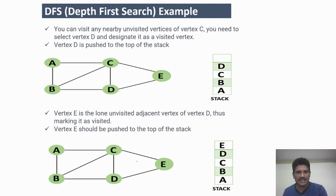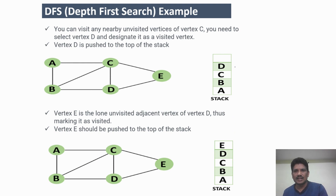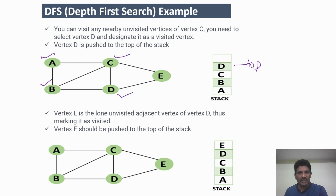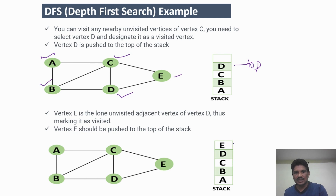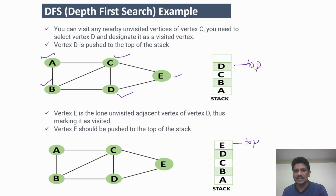I visit node D. Once visited, push it to the top of the stack. D is now the top of the stack. A, B, C, and D have all been visited. The adjacent vertex of D is E. Visit E, then push it into the stack. E is now the top of the stack. So the traversal order so far is A, B, C, D, E.